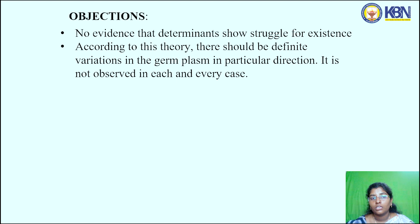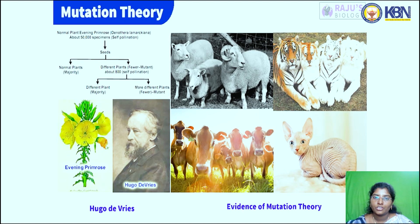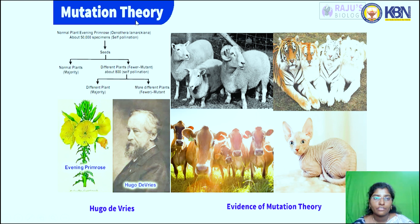Objections to the germplasm theory: there is no evidence that determinants show a struggle for existence. According to this theory there should be definite variations in the germplasm in a particular direction, but this is not observed in every case.